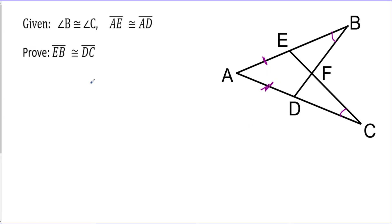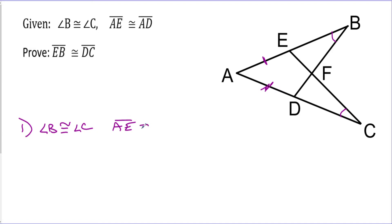I'm going to have to use that information to prove that EB, this little piece, is congruent to DC, which is this little piece. So let's start off by writing down our givens: angle B is congruent to angle C, and AE is congruent to AD. That's what we just marked — there are our givens.